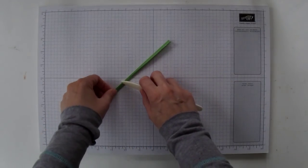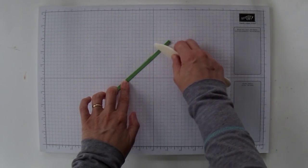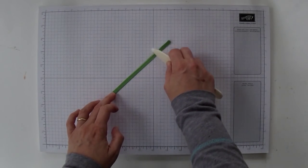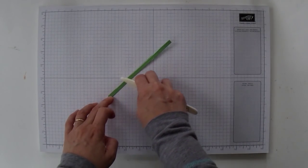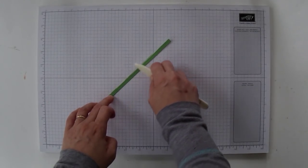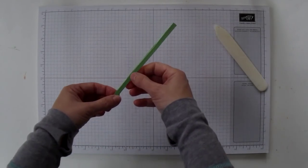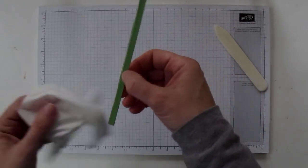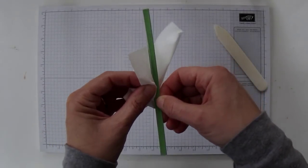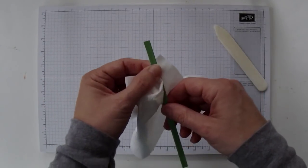And then you're just going to use your bone folder and smooth out that fold again. The adhesive is going to stick to both sides of the cardstock. Now you might have some glue squeezing out so just use a tissue to remove the excess glue.